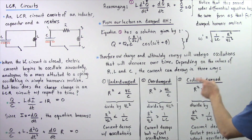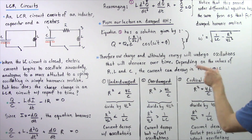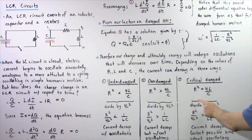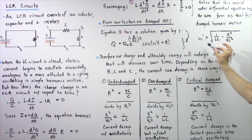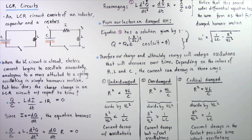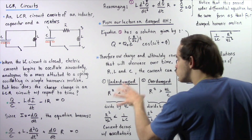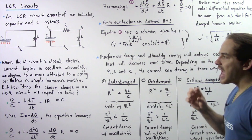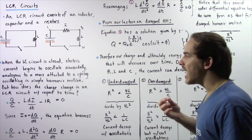Finally, in critically damped decay, R² = 4L/C. Dividing by 4L² gives the equality 1/LC = R²/4L², so ω′ equals zero. This implies the electric current decays in the fastest amount of time without any oscillations. In summary: in cases two and three (overdamped and critically damped), no oscillations occur, while in case one — the underdamped case — the electric current experiences damped oscillations.